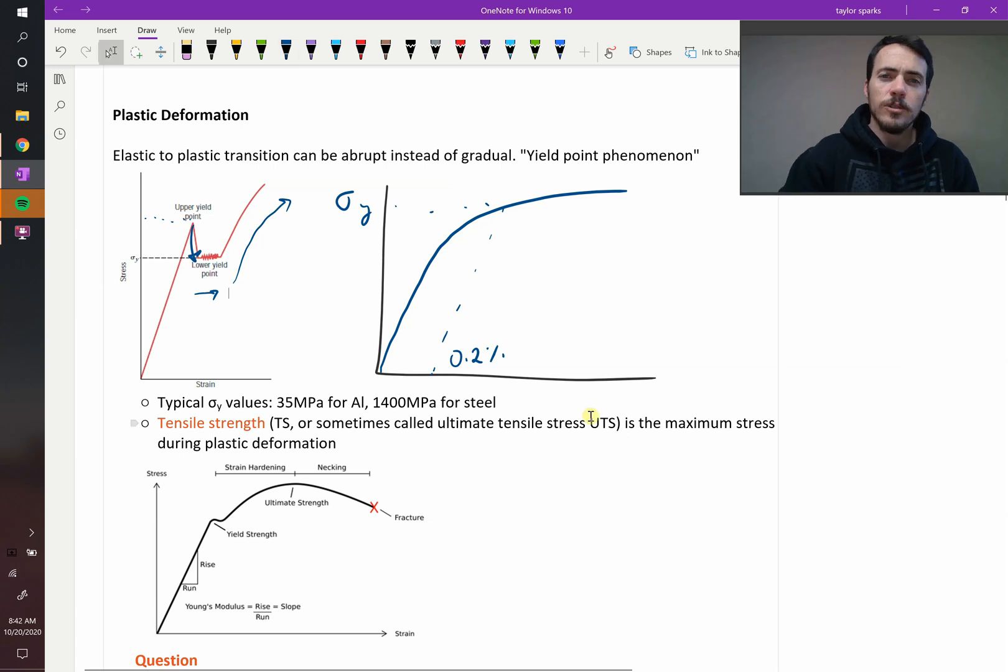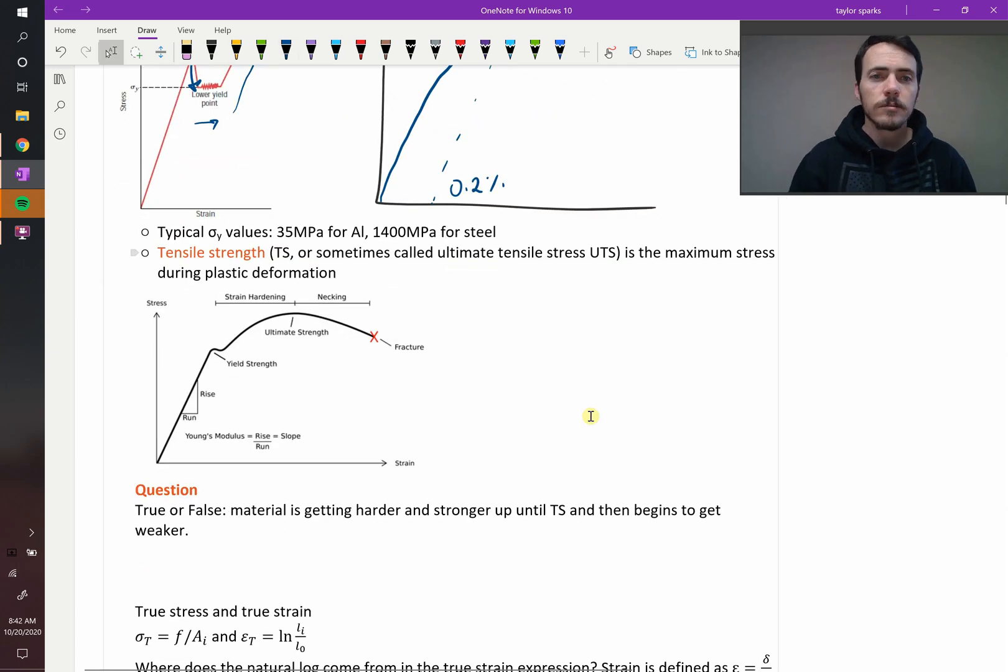So what are some typical values you can expect to see for metals? Well, aluminum has a yield strength of around 35 megapascals, pretty easy and flexible to bend, whereas steel is much stronger over around 1400 megapascals, the typical value for yield strength of steel.